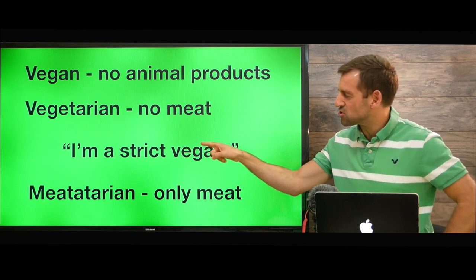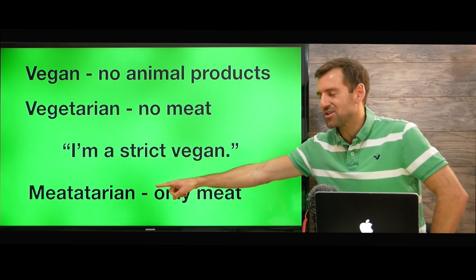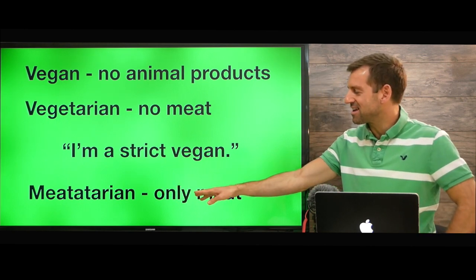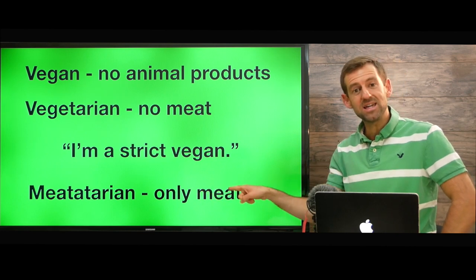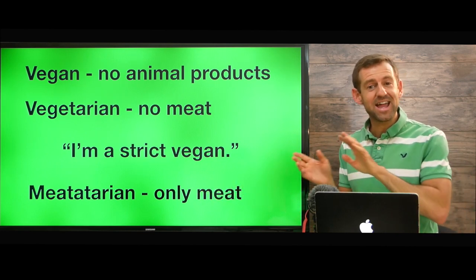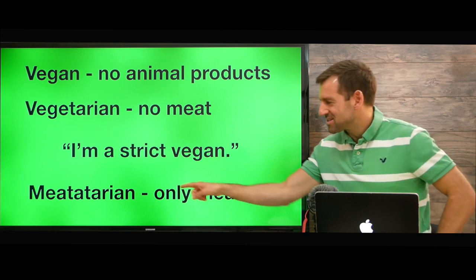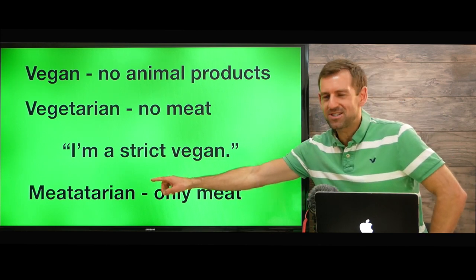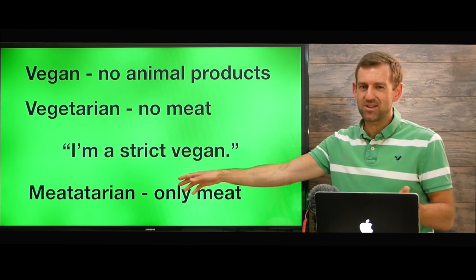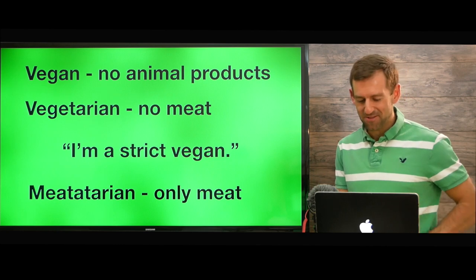So 'strict' means they stay to the rules. Sometimes you'll hear the word 'meatatarian.' A meatatarian is someone who only eats meat — they don't eat vegetables or anything else. This isn't really a real word; it's more of a joke. But sometimes people say it, so if you really like meat, you'd say, 'I'm a meatatarian.'